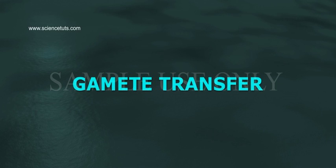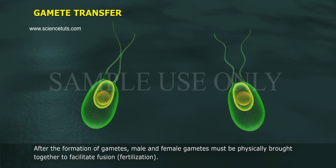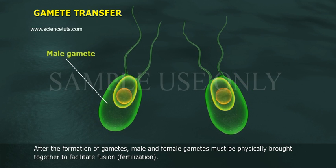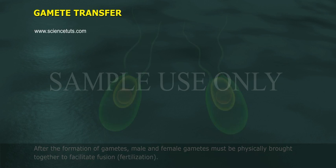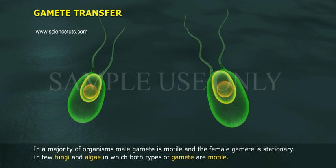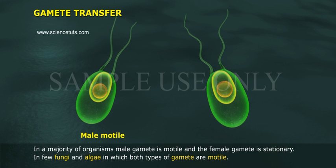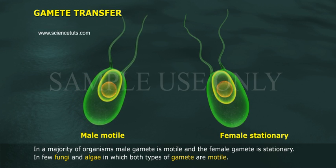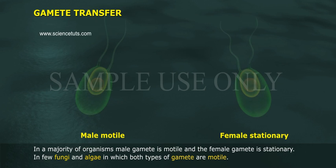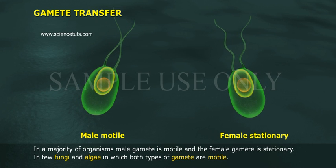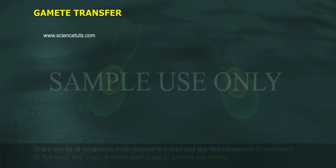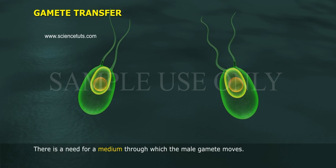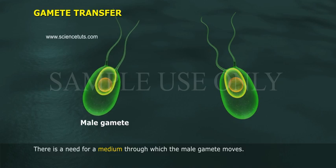Gamete Transfer: After the formation of gametes, male and female gametes must be physically brought together to facilitate fusion — fertilization. In a majority of organisms, the male gamete is motile and the female gamete is stationary. In a few fungi and algae in which both types of gametes are motile, there is a need for a medium through which the male gamete moves.